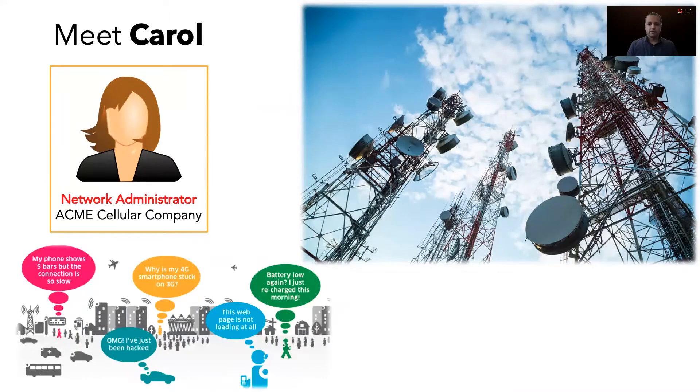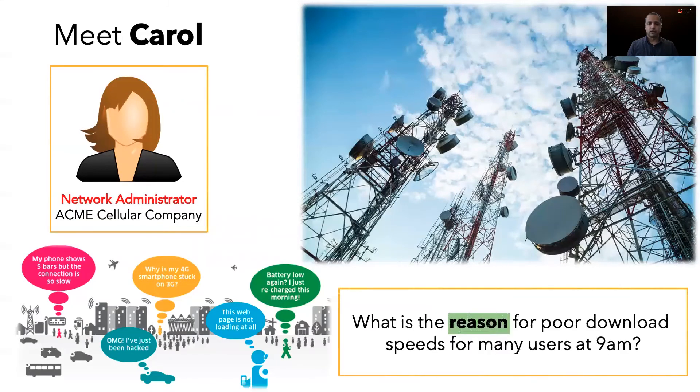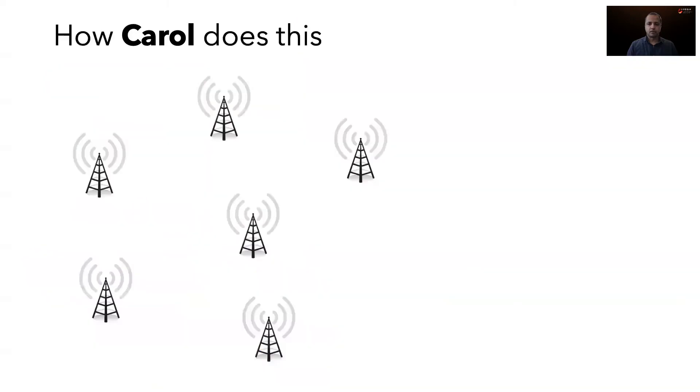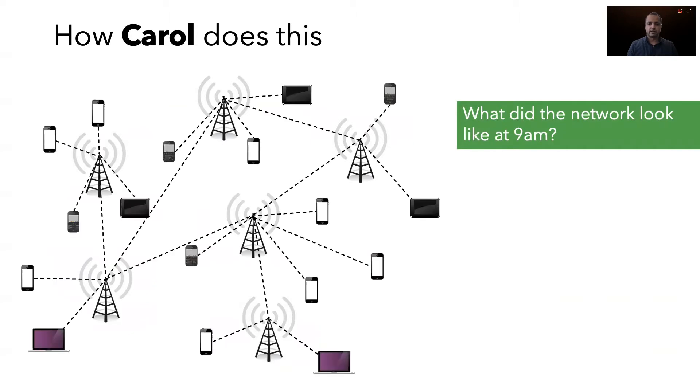For example, she might want to understand the reason for poor throughput at a particular instance in time, say at 9am. Carol uses network telemetry data to help her diagnose the issue. She might start by asking what did the network look like at 9am, the time of the incident. From the data, she sees a bunch of devices in the network connected to different base stations.